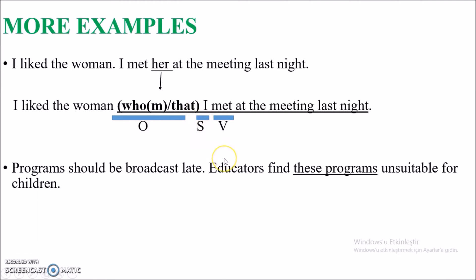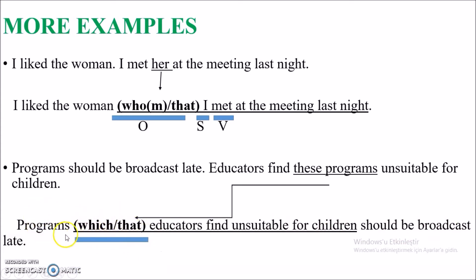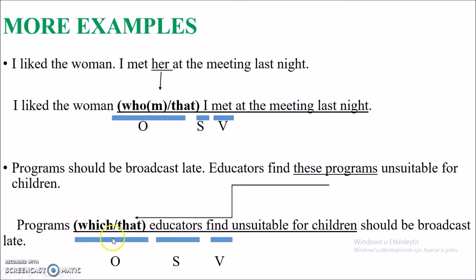Another example: 'Programs should be broadcast late' and 'Educators find these programs unsuitable for children.' The common point is 'programs'. So: 'Programs that educators find unsuitable for children should be broadcast late.' Here 'which' or 'that' is my relative pronoun — programs are things. After the pronoun, I have a different subject 'educators' and then the verb. So the relative pronoun is the object, meaning I can omit it in my sentence.